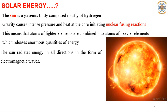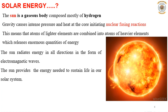The sun radiates energy in all directions in the form of electromagnetic waves. The major drawbacks to the extensive application of solar energy are: first, it arrives at the earth's surface in an intermittent and variable manner — it is not constant; and second, a large area is required to collect the solar energy in order to make use of it at a useful rate.